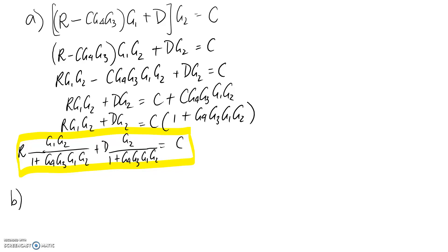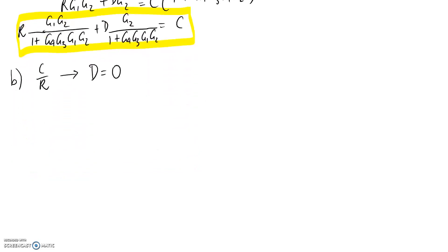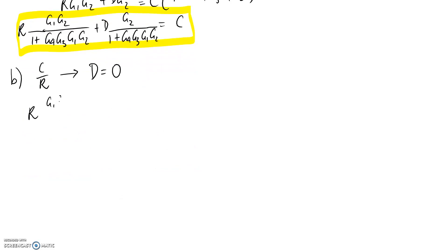To get the isolated transfer functions, let's say we want C divided by R, what we need to do is set all the other inputs to zero. In this case we've only got one other input which is D, so we need to set it to zero. If we go and evaluate what happens to this transfer function, R is going to still be not zero so we'll keep that, but here we've set D to zero so that's all going to go away.